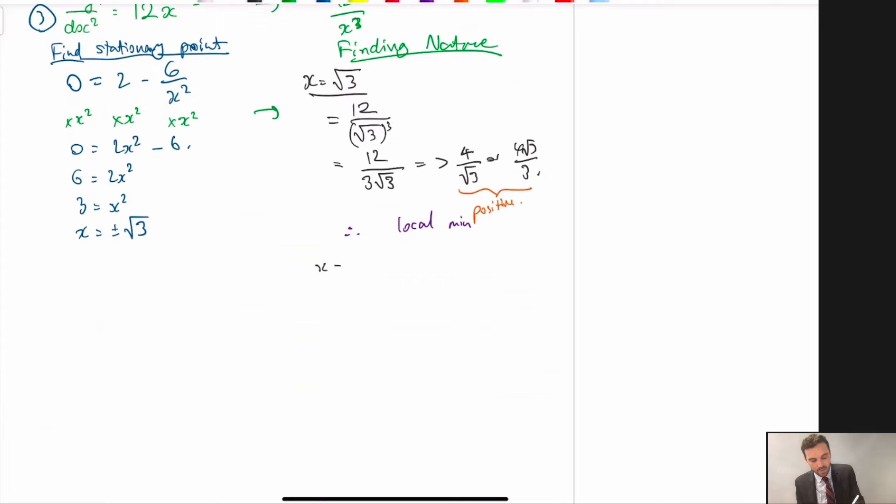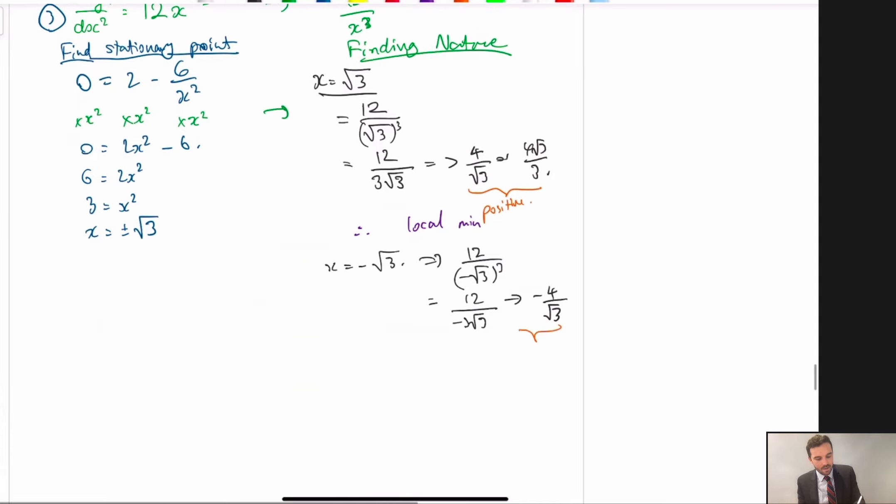Let's do the same for x is equal to negative root 3. We do the same thing. Chuck it in. Cubit. Outcomes 12 on. And this is just going to be negative 3 on root 3. And this will go to negative 4 on root 3. So, we can see that this answer is going to be negative, okay? Therefore, we've found a local maximum.